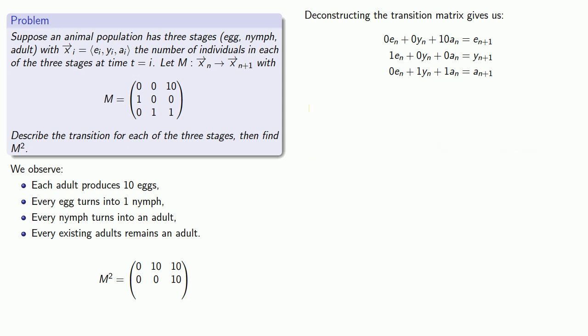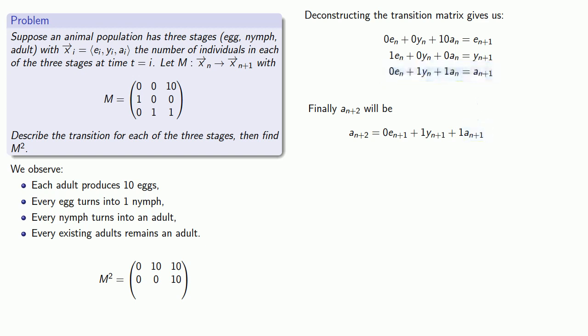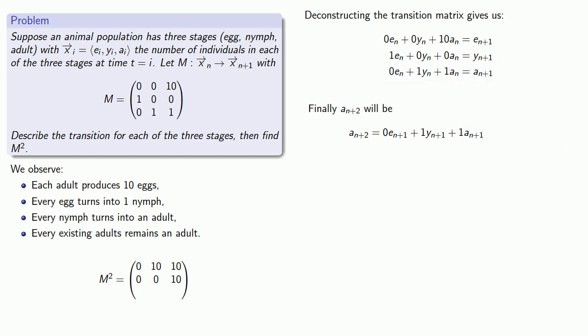Finally, the number of adults at time n+2 equals the number of nymphs plus adults at time n+1. We know the formulas for each of these, so after substitution we have the formula for the number of adults at time n+2 in terms of eggs, nymphs, and adults at time n — completing the third row of M squared.